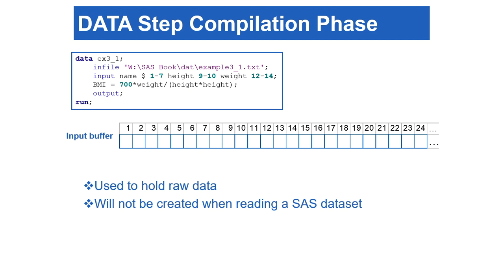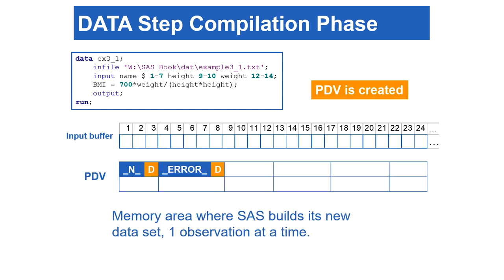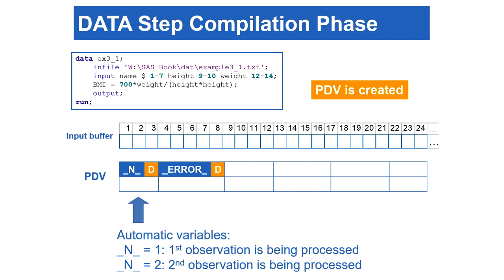Let's talk about the Datastep compilation phase. Since we are reading a raw data file, the input buffer is created at the beginning of the compilation phase. The input buffer is used to hold raw data. However, if we read a SAS dataset instead of a raw data file, the input buffer will not be created. SAS also creates the Program Data Vector, or PDV, during the compilation phase. PDV is a memory area on your computer, and SAS uses the PDV to build the new dataset one observation at a time. Within the PDV, there are two automatic variables: _N_ and _ERROR_. _N_ equaling 1 indicates the first observation is being processed, _N_ equaling 2 indicates the second observation, and so on.